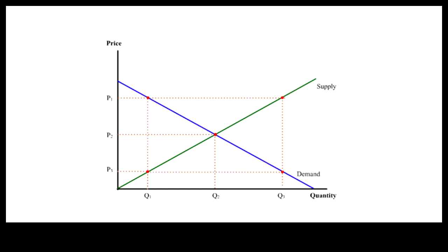Given these supply and demand curves, the market price is determined by trial and error. If the price is set too high, the quantity supplied will exceed the quantity demanded. The resulting gap is called surplus or excess supply.